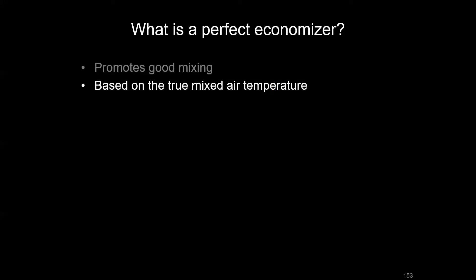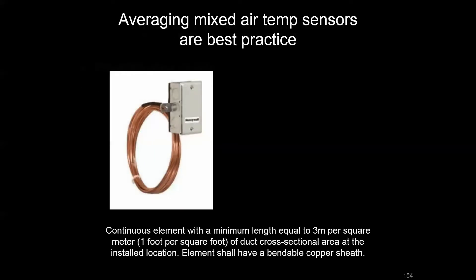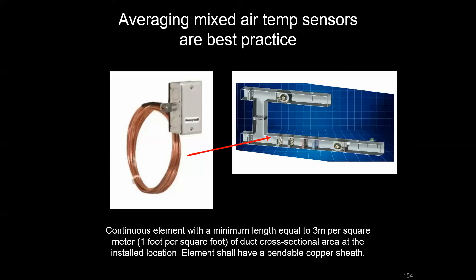In this perfect economizer, we really want a true mixed air temperature to be able to make decisions on. Best practice would be to have an averaging sensor in your mixed air plenum. Our unified facility criteria doesn't specify that we must use averaging sensors for economizers, but where we do use them there's criteria about what that should look like.